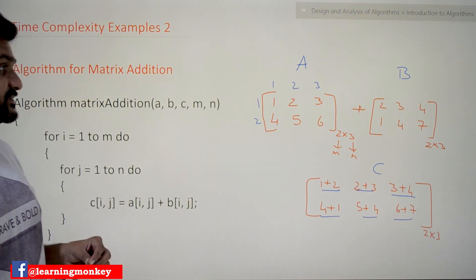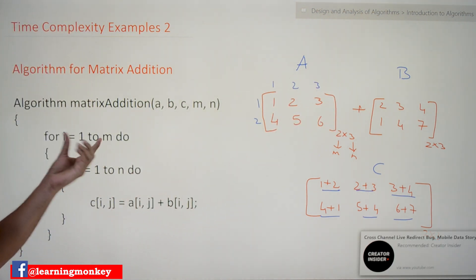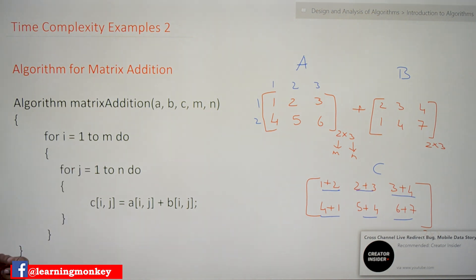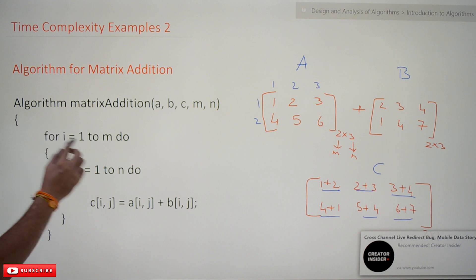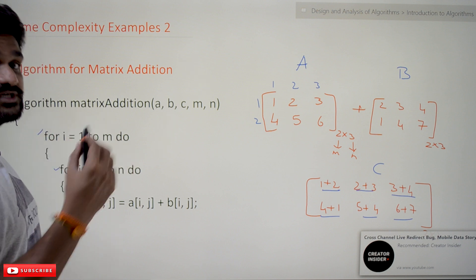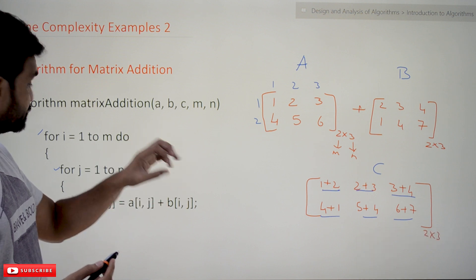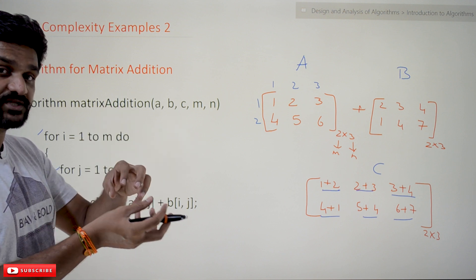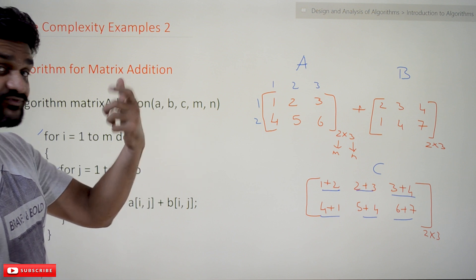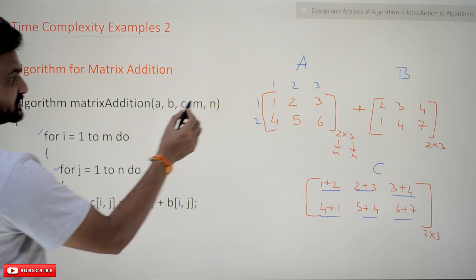To get the solution for the addition of these two matrices, we have written this algorithm for matrix addition. Here we are using nested loops — a loop inside another loop. The key point to understand is: when nested loops are involved in an algorithm, what is the time complexity? That is very important to understand.